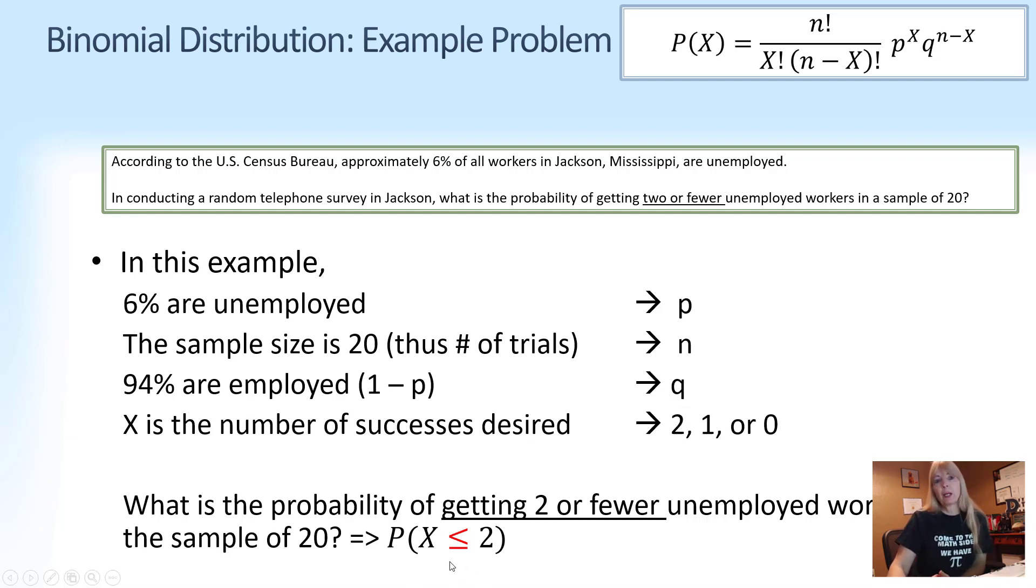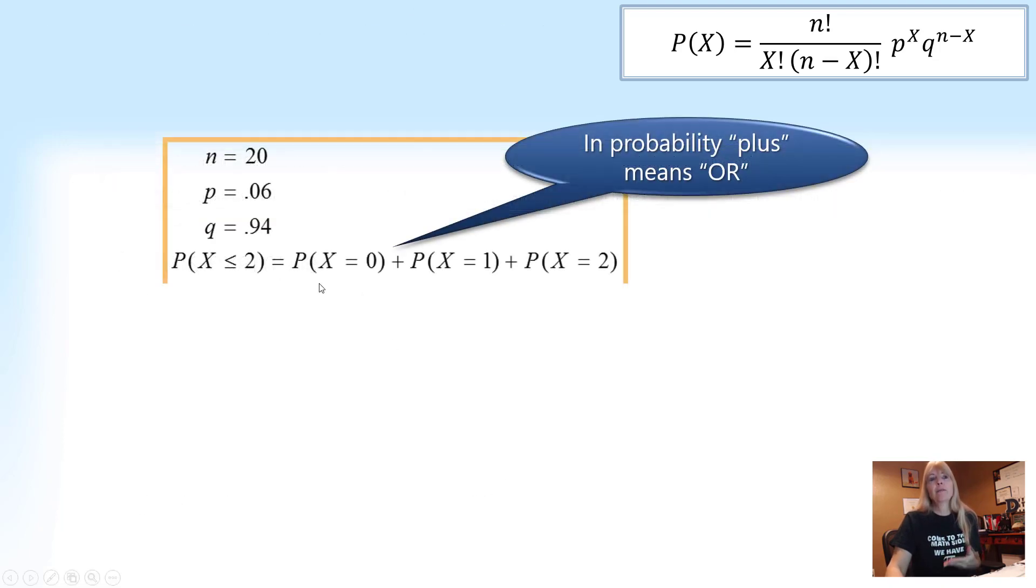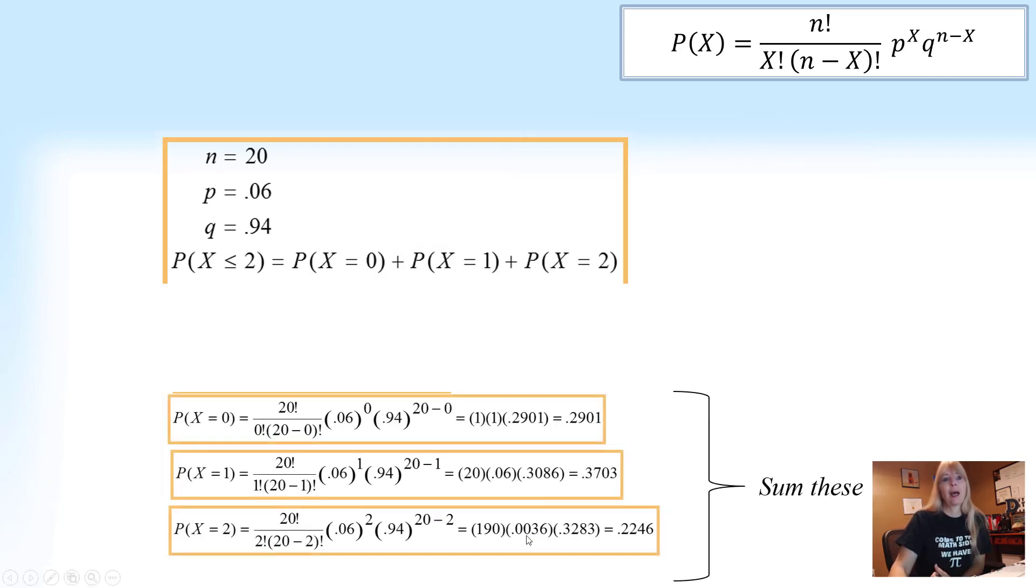So we typically write it out like this. And if you remember when you put the line under it, that's less than or equal to 2, so that it actually includes 2. So how you have to work these is you would have to work probability of 0, probability of 1, probability of 2. And then you'd add them all up. So either none unemployed or 1 or 2. Remember, or means to add.